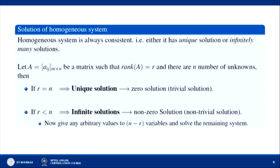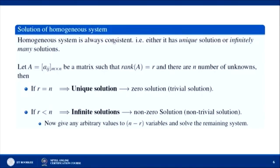For homogeneous systems, we will first consider how to find solutions where the right hand side is 0. The homogeneous system is always consistent: x = 0 is always a trivial solution. So for homogeneous systems, there are only two possibilities: either it has a unique solution (the trivial solution x = 0) or it has infinitely many solutions.